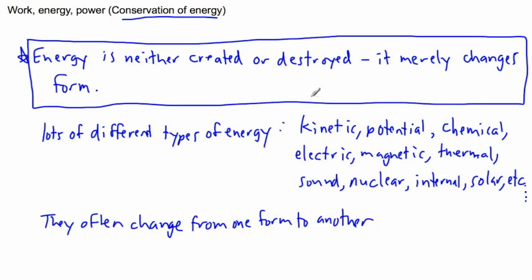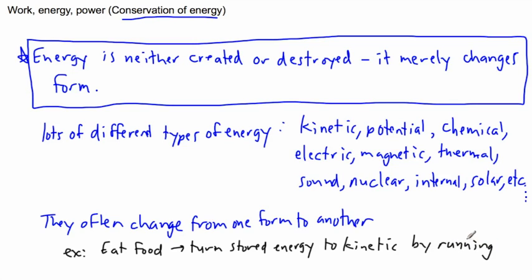So an example of that could be, maybe I eat food. So what happens then? If I eat food, well then I have some stored energy. I have some stored kinetic energy then in my body. Maybe I can turn that stored energy to kinetic energy by running. So this is the whole idea of how your body works.